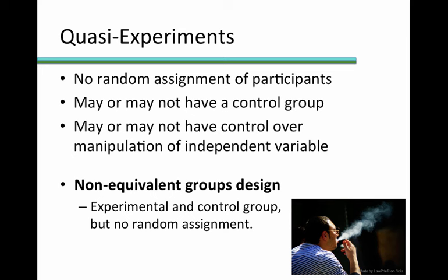In a non-equivalent groups design, we have an experimental group and a control group, but participants are not randomly assigned to those groups. Oftentimes, this is because the groups are known to be different at the outset — from the beginning. You can't randomly assign participants with autism or typically developing controls in a study of autism, or smokers and non-smokers in a study of the effects of smoking, and we know from the outset of the study the two groups are going to be different.